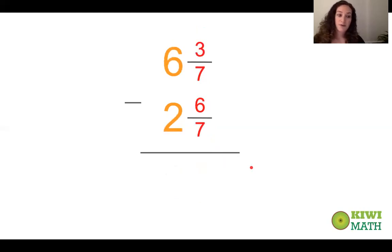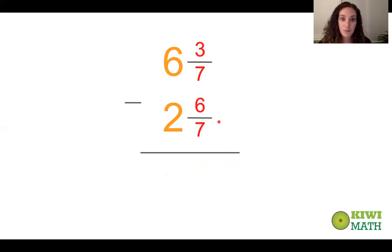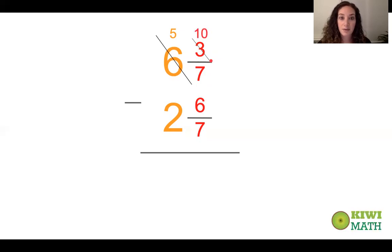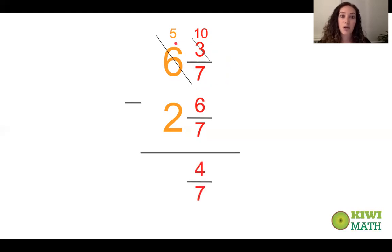Let's try another one, sticking with the vertical format. Looking at the fractional parts first: three sevenths minus six sevenths — we do not have enough sevenths. So we go to the wholes, take away one whole, giving us five wholes. There are seven sevenths in one whole, so we add the seven sevenths to the three sevenths, giving us ten sevenths. Ten sevenths minus six sevenths is four sevenths, and five minus two is three. Our answer is three and four sevenths.